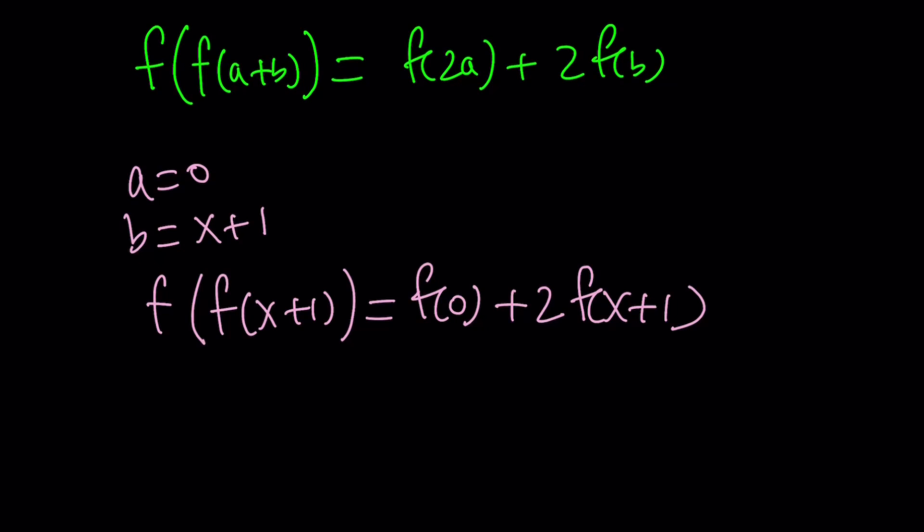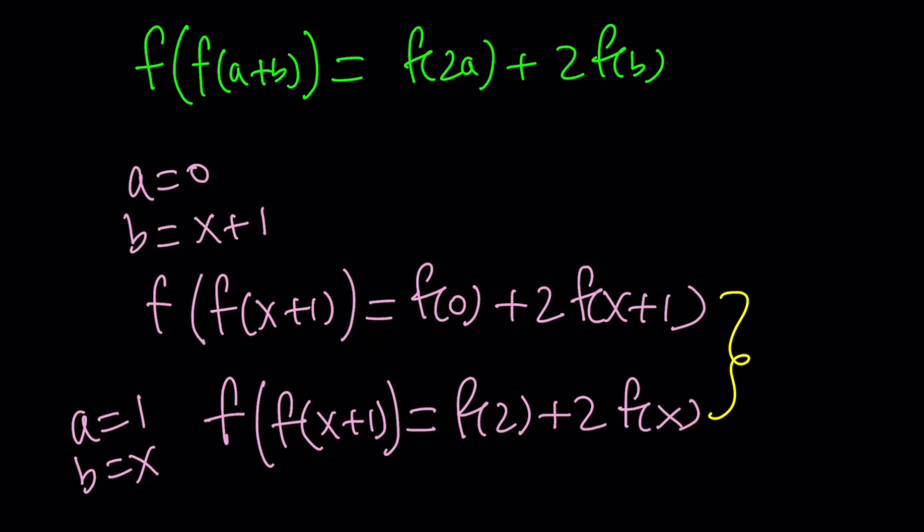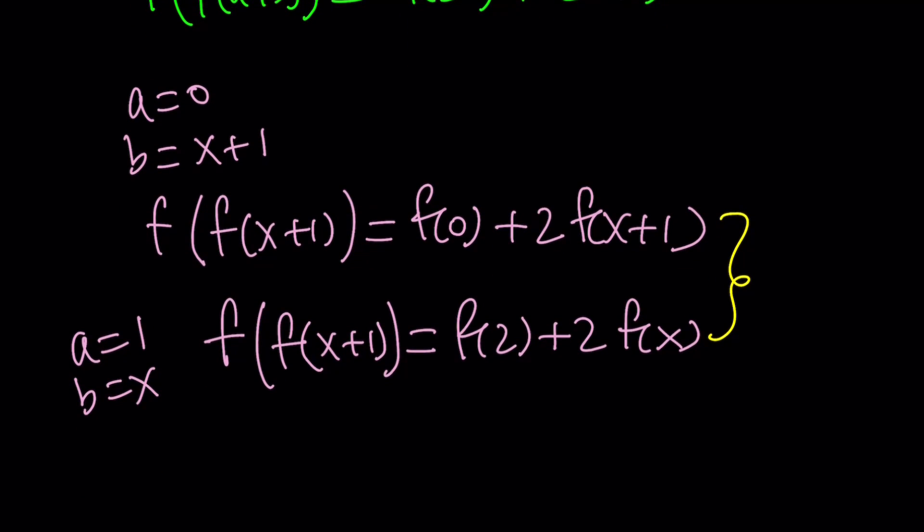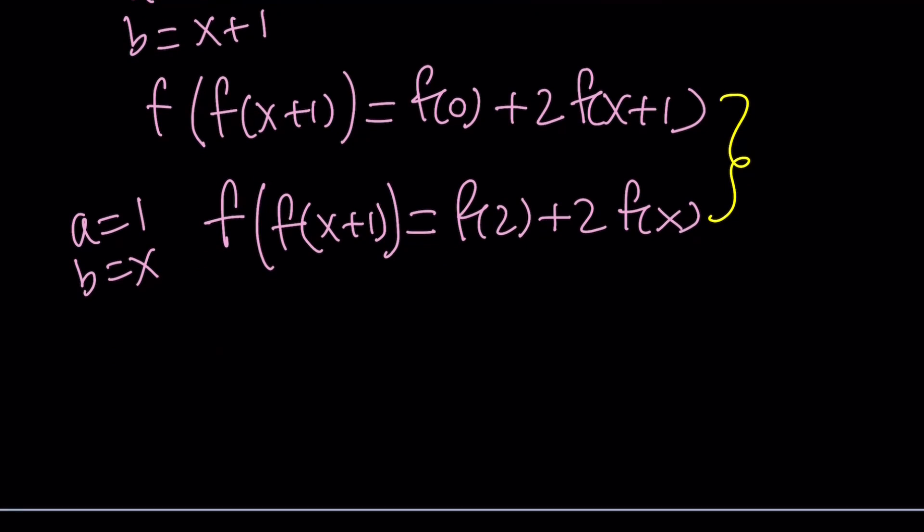And we can now replace a with 1 and b with x. That's going to do something similar on the left hand side. We're going to get f of f of 1 plus x, which is the same as x plus 1, equals f of 2 plus 2 times f of x. So we've got a system of equations, which is nice because we have that flexibility with the a and b. We can replace them with pretty much anything we want, as long as they're integers.